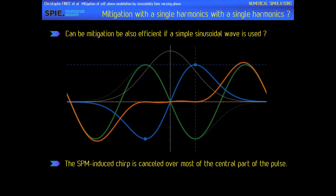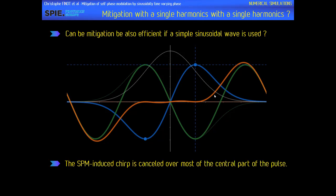Taking the same example as before — a Gaussian pulse that induces the SPM chirp plotted in blue — to compensate the chirp we use a sinusoidal waveform plotted in green. We can see it differs from the perfect modulation. But what is nice is that when we add this external modulation with the one induced by SPM, we cancel the frequency chirp over most of the central part of the pulse. There are deviations that may be quite strong, but they are in the wings of the pulse and will not affect most of the energy of the pulse. From this, it seems that a sinusoidal wave could be very promising.